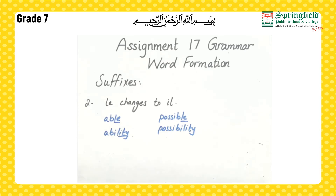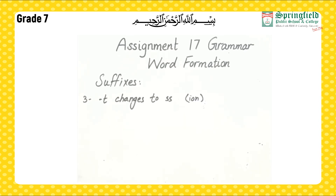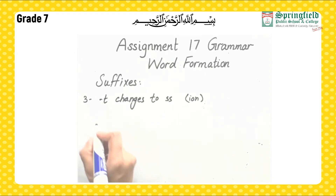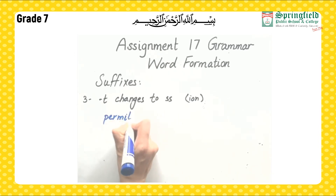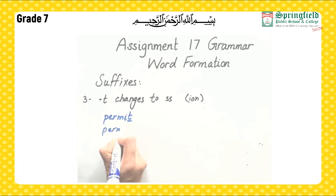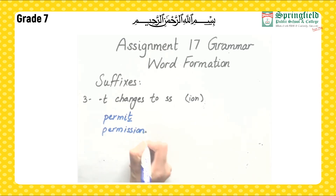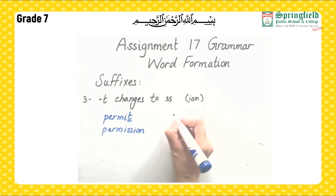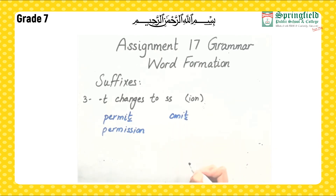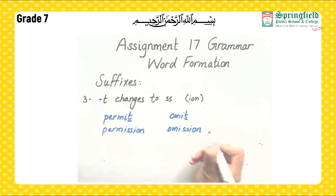The next rule: when using the suffix -ion, we omit the final t and replace it with double s. For example, permit — we remove the t and make permission. Another example is omit, which becomes omission.